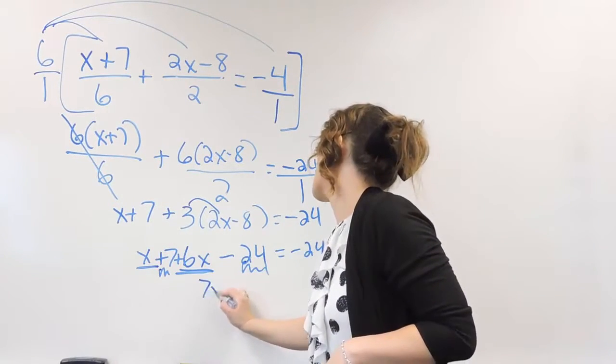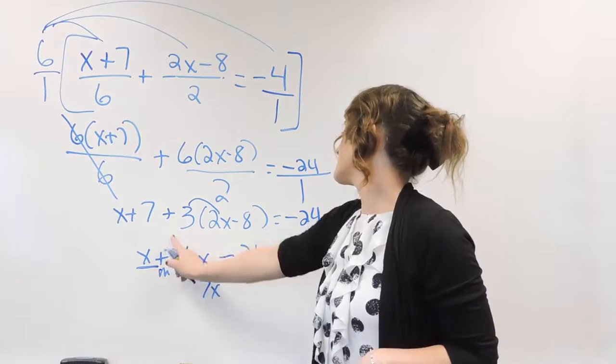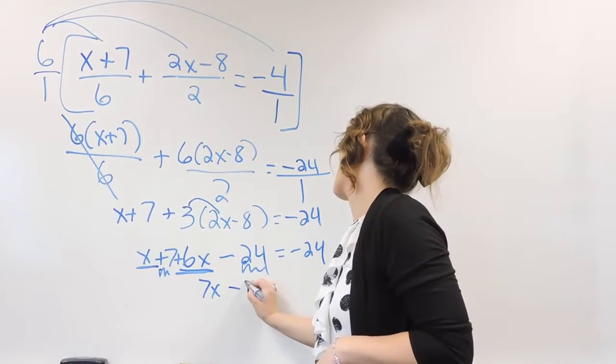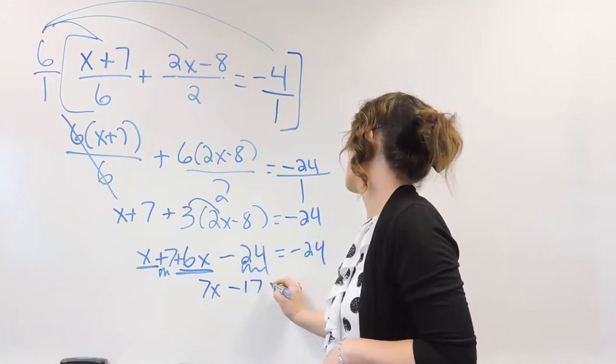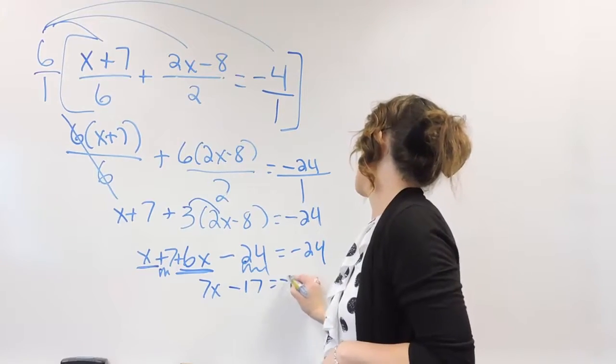So 1x plus 6x is 7x. 7 minus 24, we get a negative 17 there, is equal to negative 24.